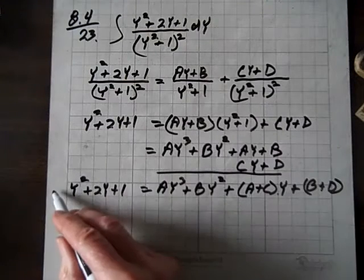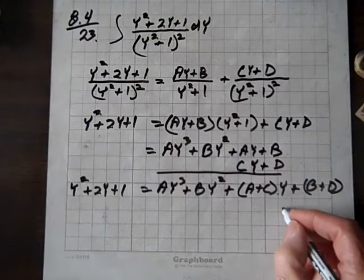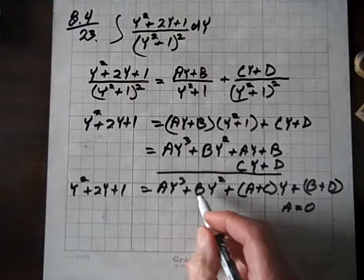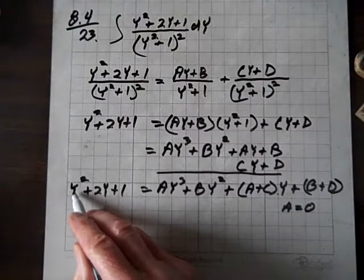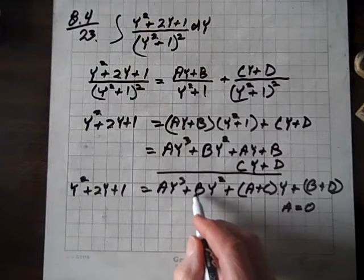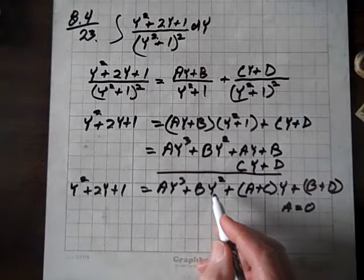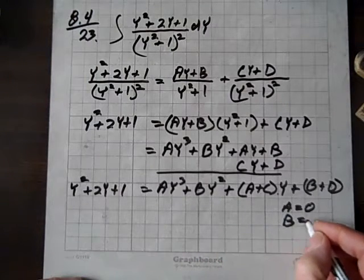Well, there is no cubic term here on the left, so that means that a must equal 0. There is a quadratic term over here and the coefficient on it is 1, and so b is the coefficient here and these equate, so you would just equate like terms. So b must equal 1.